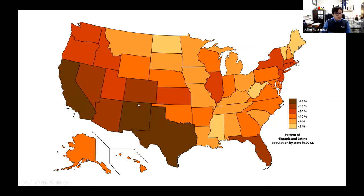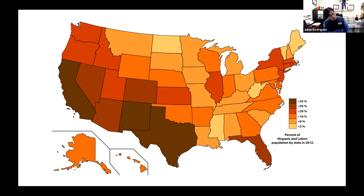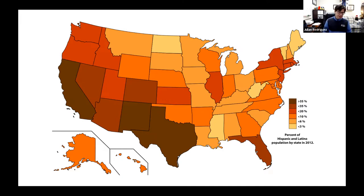For those not familiar with demographics in the United States, this shows the Hispanic and Latino population by state in 2012. The more intense the brown color, the higher the percentage of Latinos living in that area. You can see a belt in the south with a lot of Latinos living there, as well as pockets in Florida, up to the northeast, and of course New York City. In those intense areas you can expect a high Hispanic population and many Hispanic television stations.